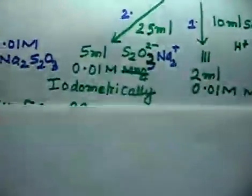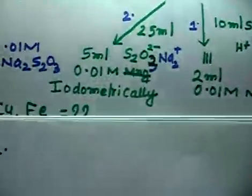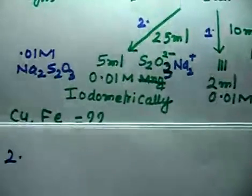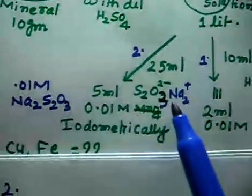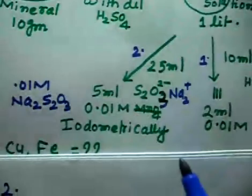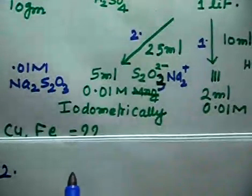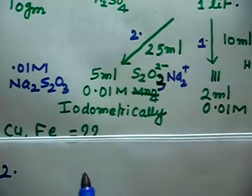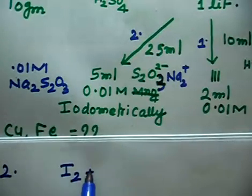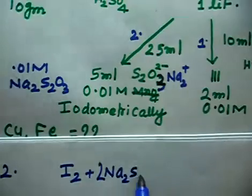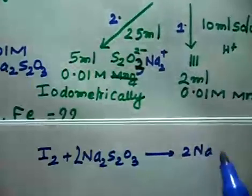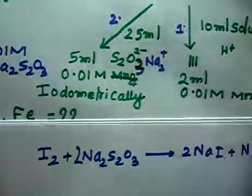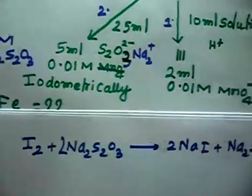Now let us discuss titration 2. This is a quite important titration — 25 ml of solution is titrated iodometrically with S₂O₃²⁻. If you remember the iodometric titration reaction: I₂ + 2Na₂S₂O₃ → 2NaI + Na₂S₄O₆. So this is the iodometric titration. But in this case we don't have any I₂ directly — so from where is the I₂ coming?